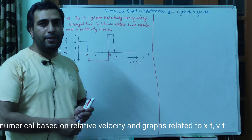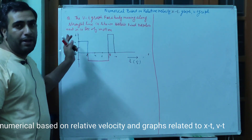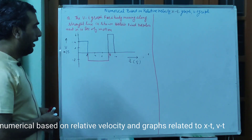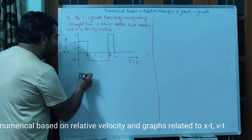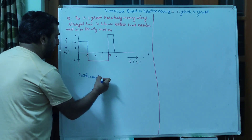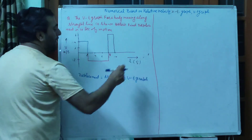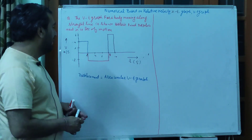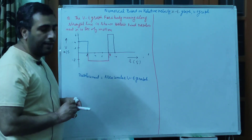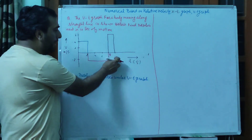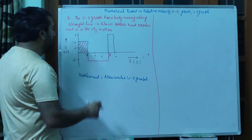आपके पास velocity-time graph दिया हुआ है और आपने displacement calculate करनी है इस graph से, जब time हमारे पास 0 से 10 seconds था। तो एक derivation में किया था कि displacement is equal to area under velocity-time graph। वही concept हमने लगाना है कि इस velocity-time graph के under 10 seconds में कितना area आ रहा है।